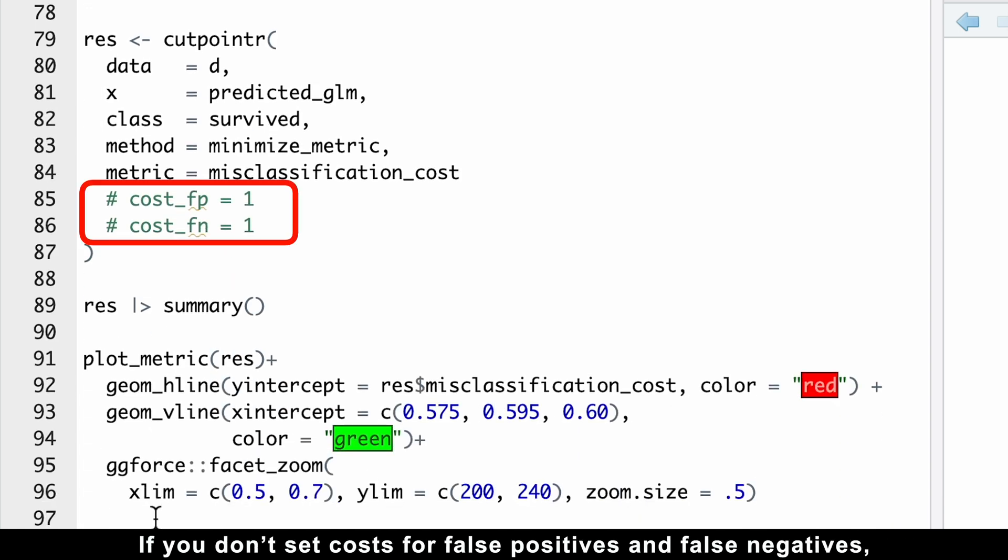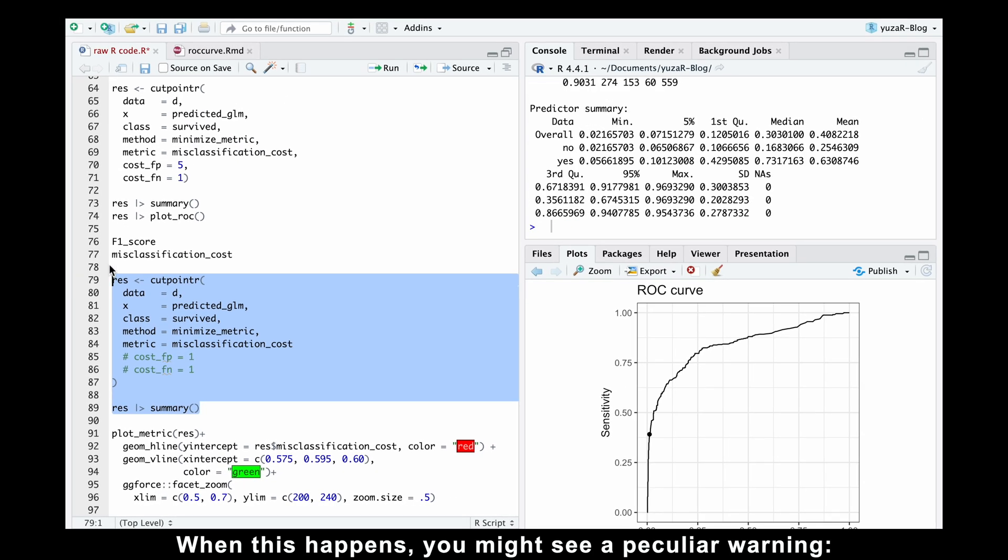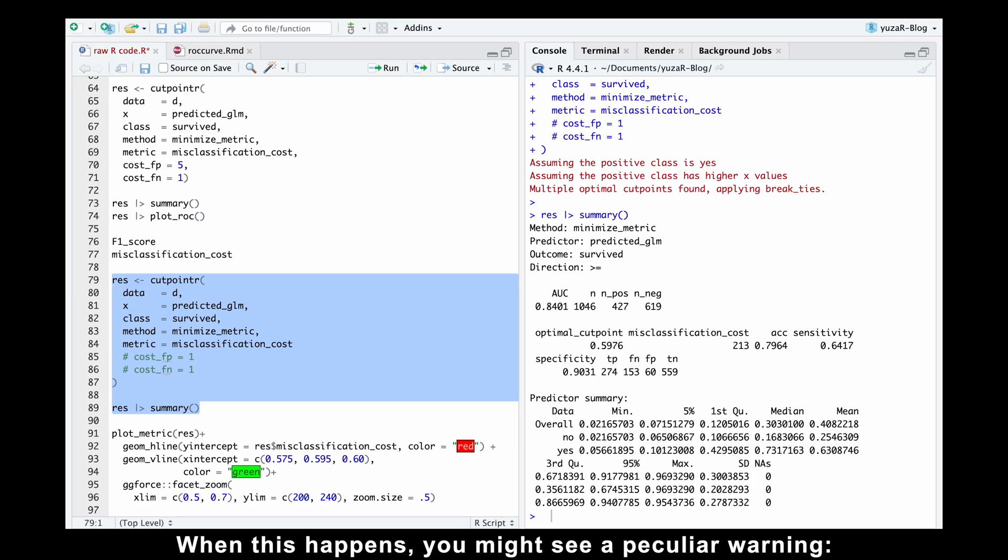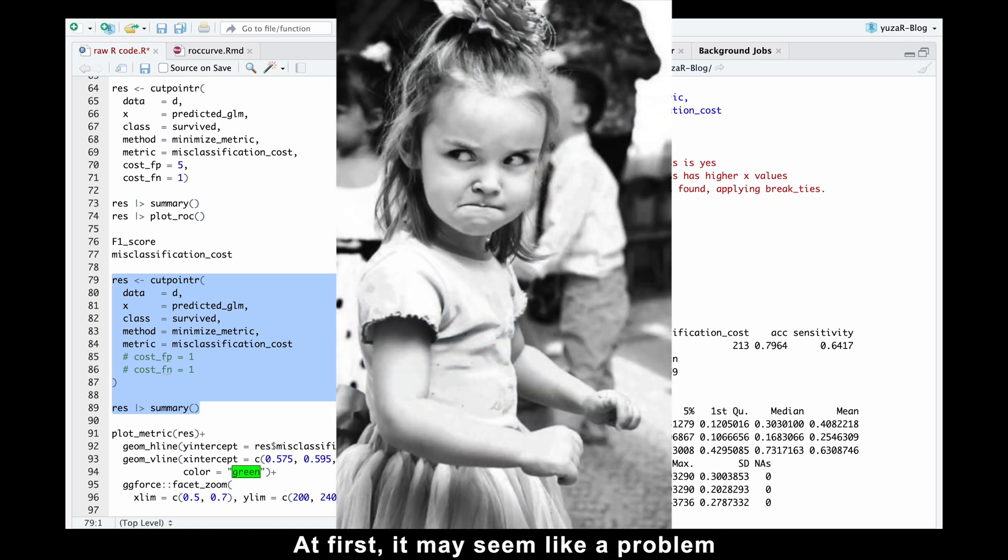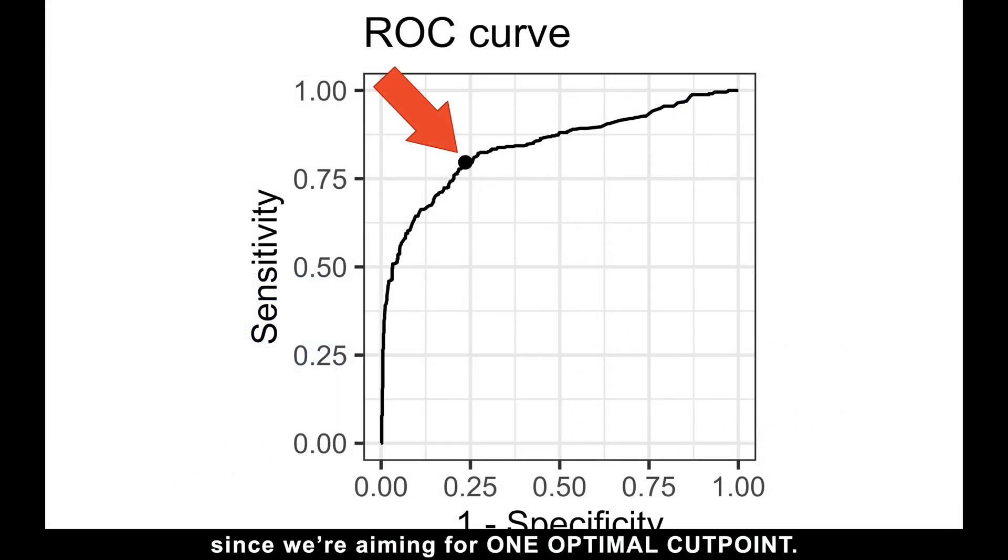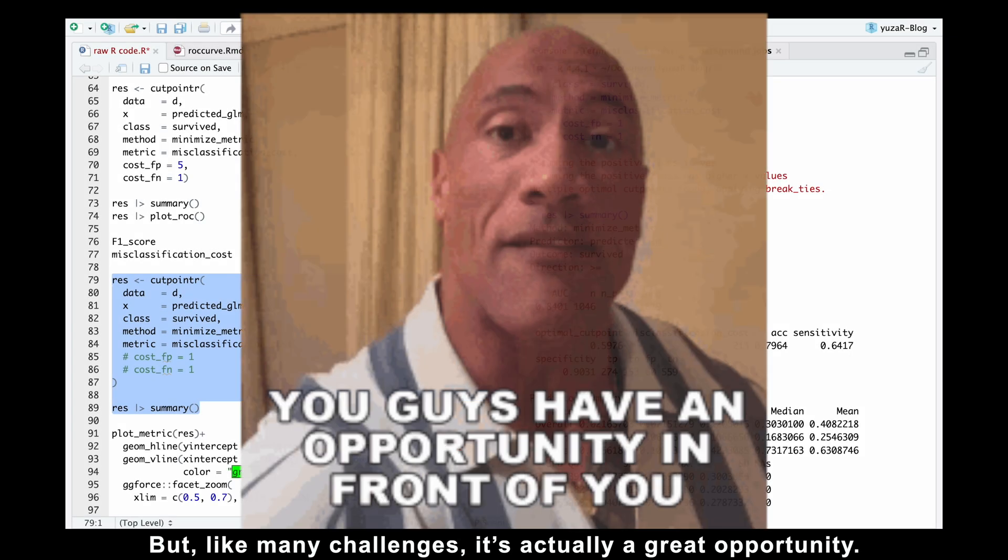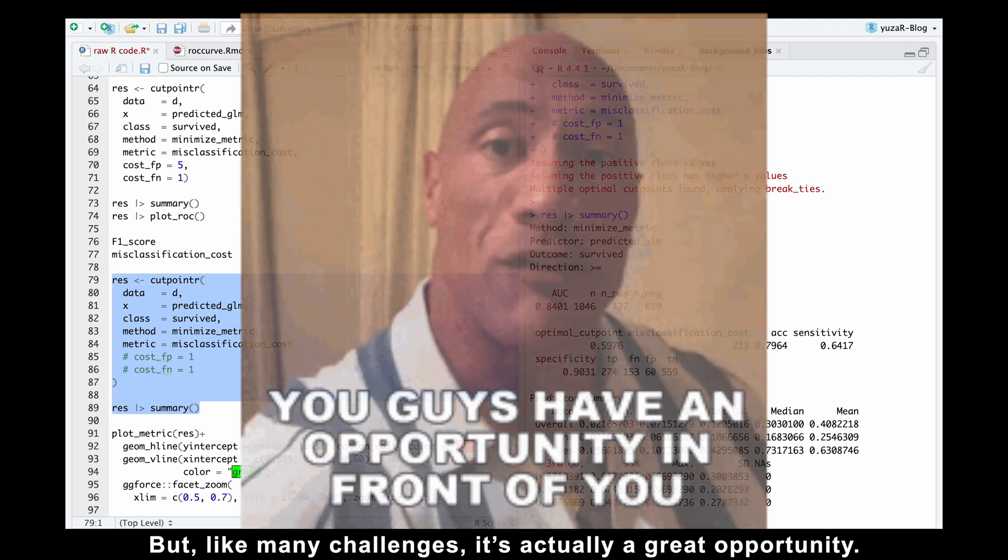If you don't set costs for false positives and false negatives, they are treated equally, one-to-one, by default. When this happens, you might see a peculiar warning: multiple optimal cutpoints found. At first, it may seem like a problem, since we are aiming for one optimal cutpoint. But like many challenges, it's actually a great opportunity.